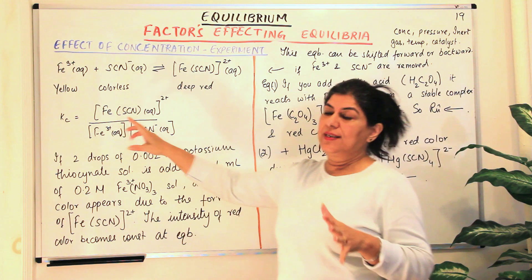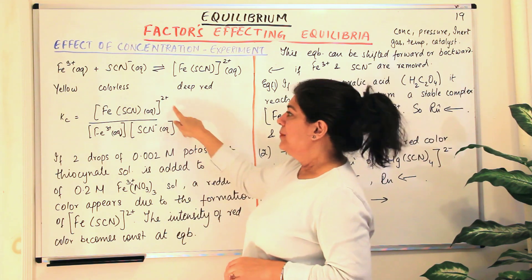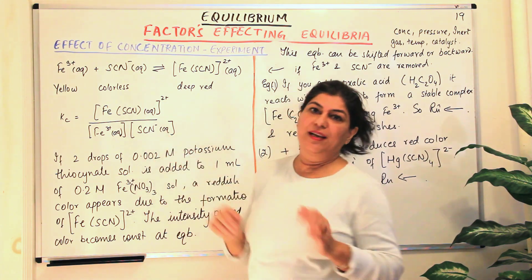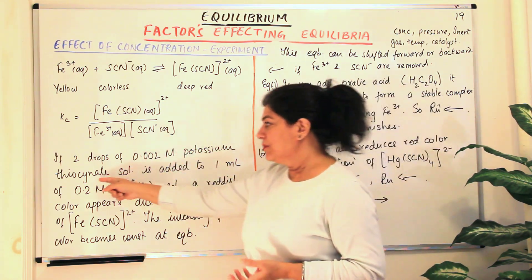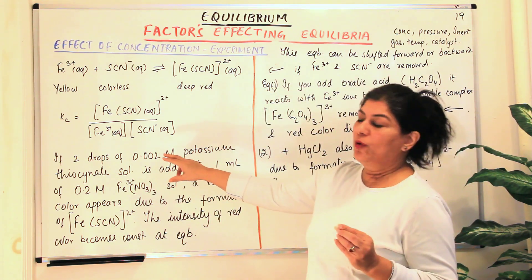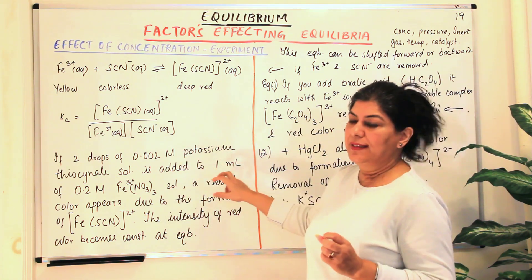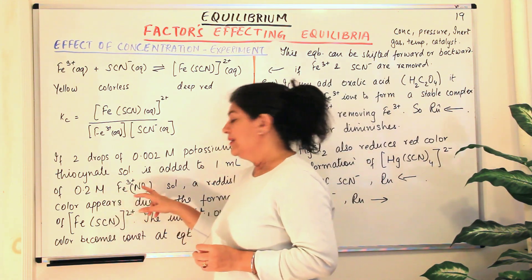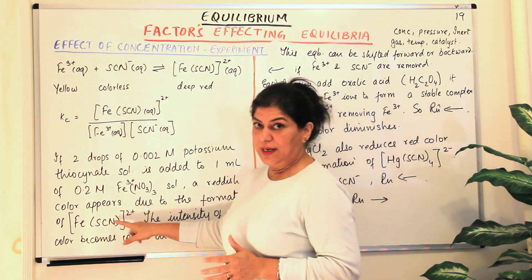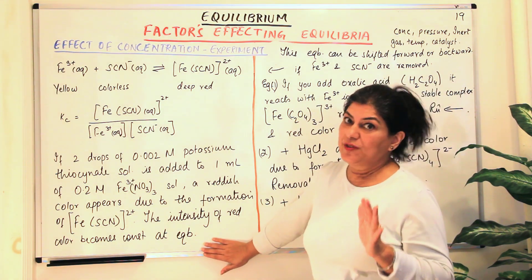The equilibrium constant, when equilibrium is established, would be the concentration of ferric thiocyanate ions — the product — divided by the concentration of the reactants, that is the ferric ions and the thiocyanate ions provided by potassium thiocyanate and ferric nitrate solution. For example, if two drops of 0.002 molar potassium thiocyanate solution is added to one millilitre of 0.2 molar ferric nitrate solution, a reddish colour appears due to the formation of ferric thiocyanate ion, and the intensity of the red colour becomes constant at equilibrium.